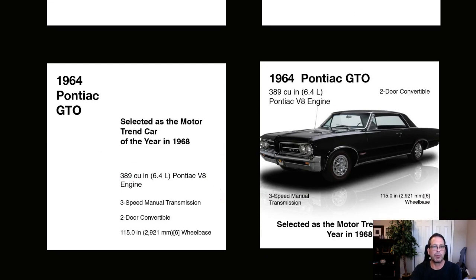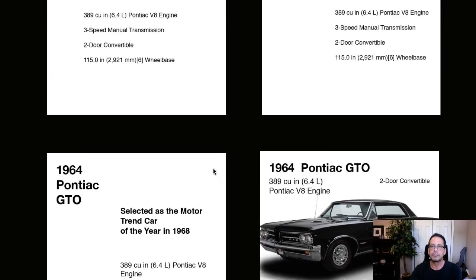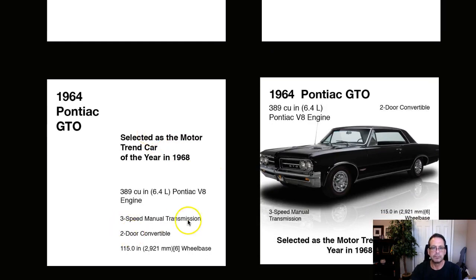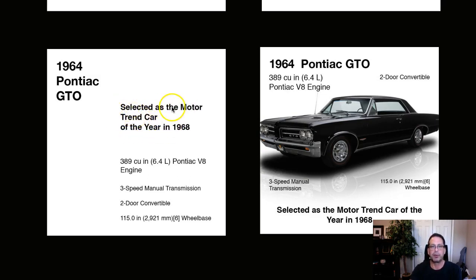In the third example, we're looking at multiple contrasts in weight and scale. This is excellent — really nice job here. Very, very good work. So this is your multiple weights, multiple sizes. I'm wondering about 'Selected as Motor Trend Car of the Year' right here — that's a really unusual break. What I would say is: 'Selected as Motor Trend Car of the Year' — put 'Car of the Year' right here.